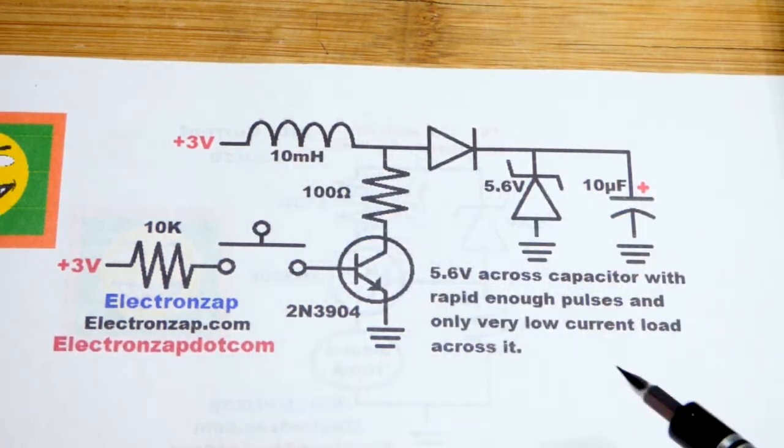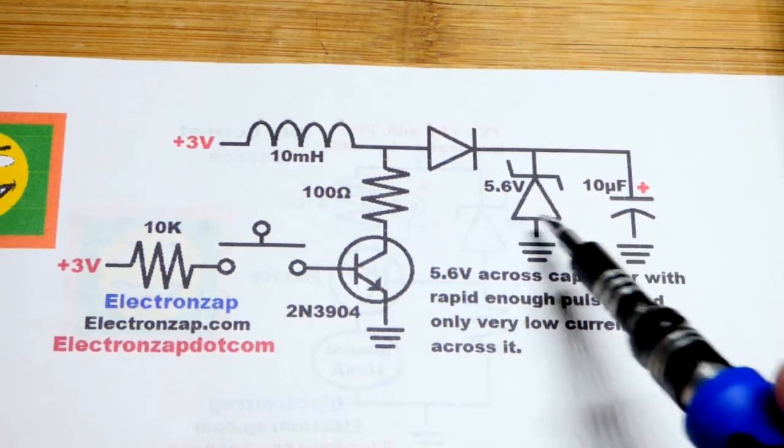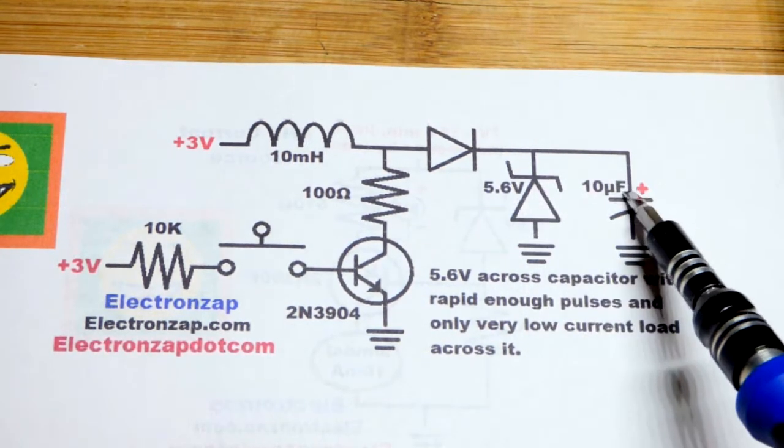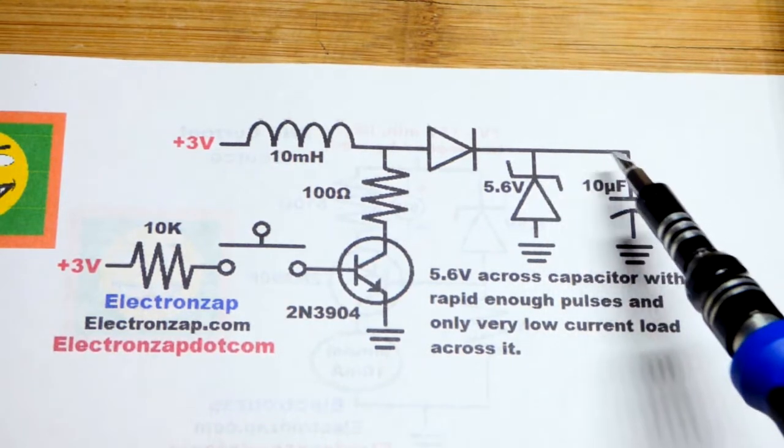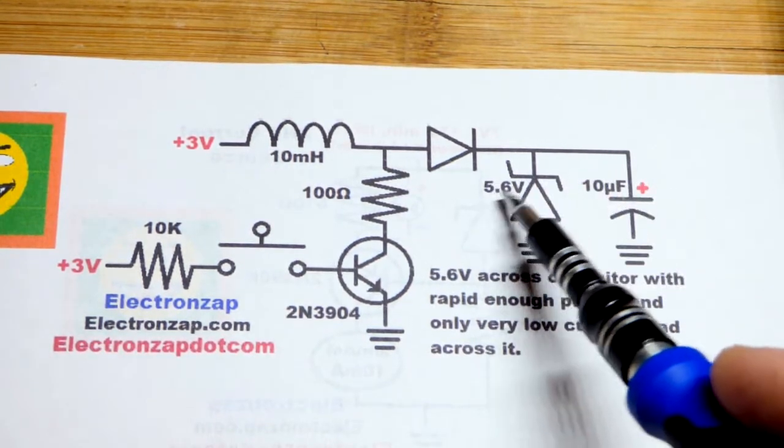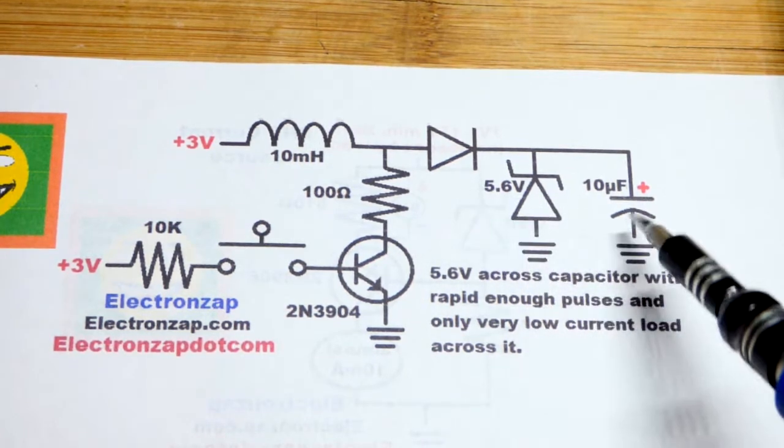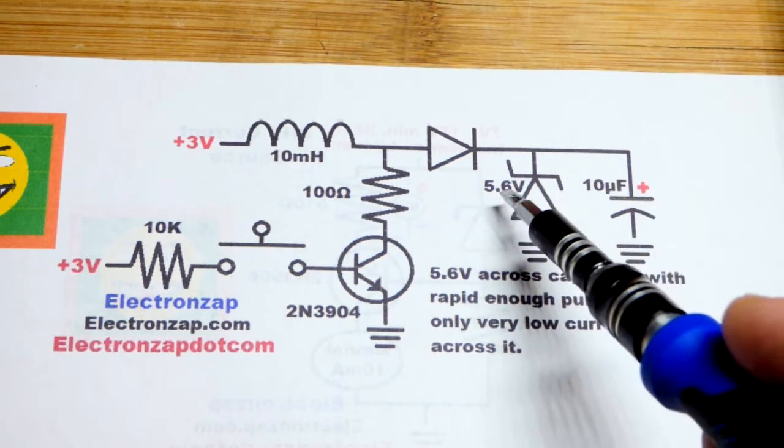And so the zener diode here, we're going to use a 5.6 volt zener diode. That would keep the capacitor from charging above 5.6. And as current goes down, it blocks a little less voltage and so it might even trickle down to a 5 if we just left the capacitor alone.